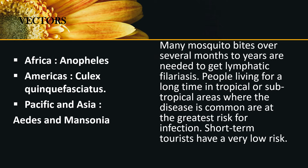Many mosquito bites over several months to years are needed to get lymphatic filariasis. People living for a long time in tropical or subtropical areas where the disease is common are at the greatest risk for infection. Short-term tourists have a very low risk. In Africa, Anopheles is the vector; in the Americas, it's Culex; and in the Pacific and Asia, it's Aedes and Mansonia.